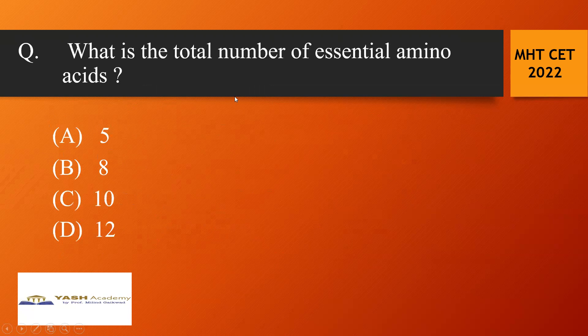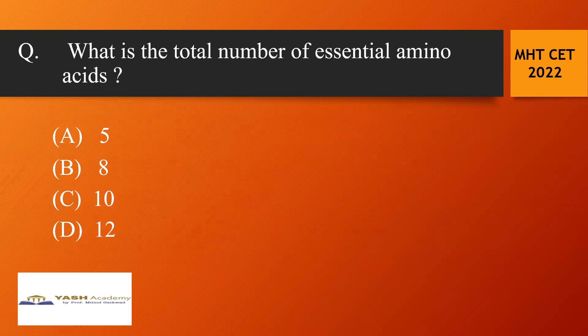And this is the last question of this video. What is the total number of essential amino acid? I think you are familiar with this answer. In all there are 20 amino acids. Out of this 20, 10 are essential and 10 are non-essential. So C is the correct answer option.